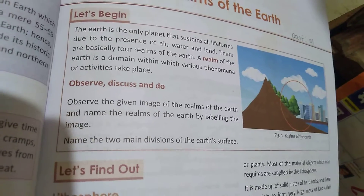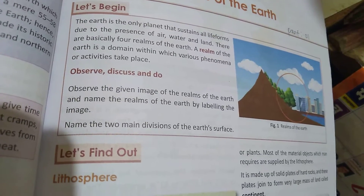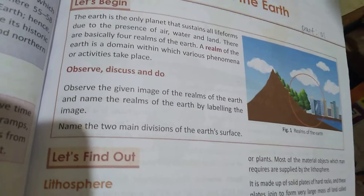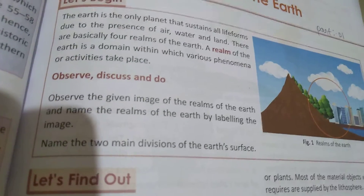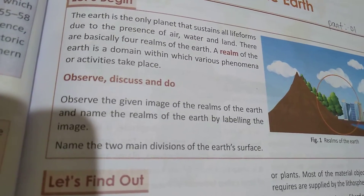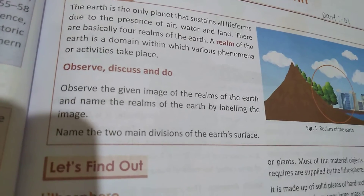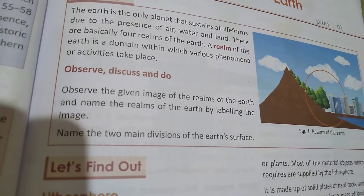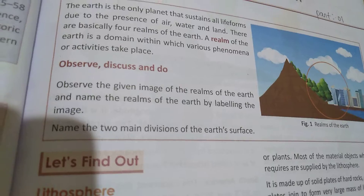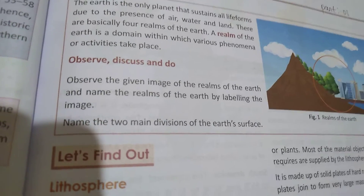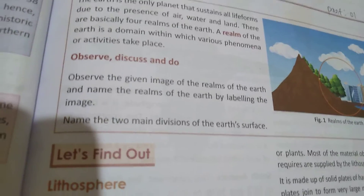This word doesn't know everyone — 'realms' is not commonly heard. You will find a planet where life is present: air, water, land. It's a very good combination. There are basically 4 realms of the Earth. A realm of the Earth is a domain within which various phenomena and activities take place.